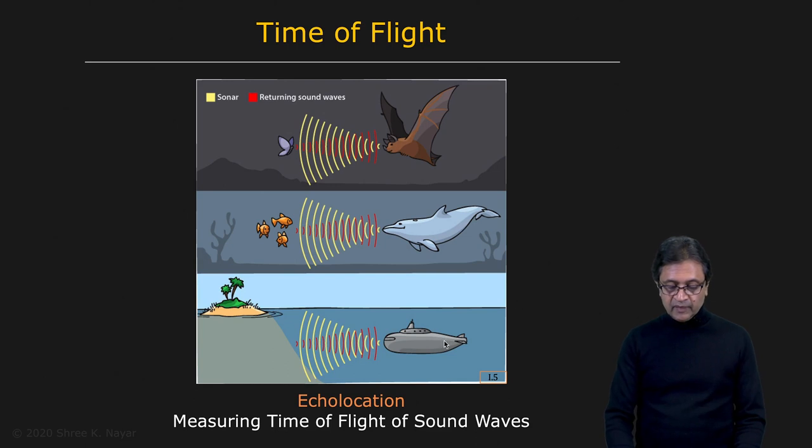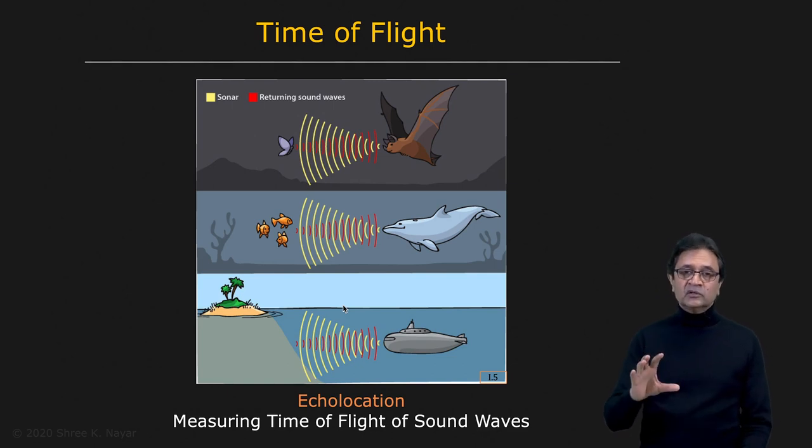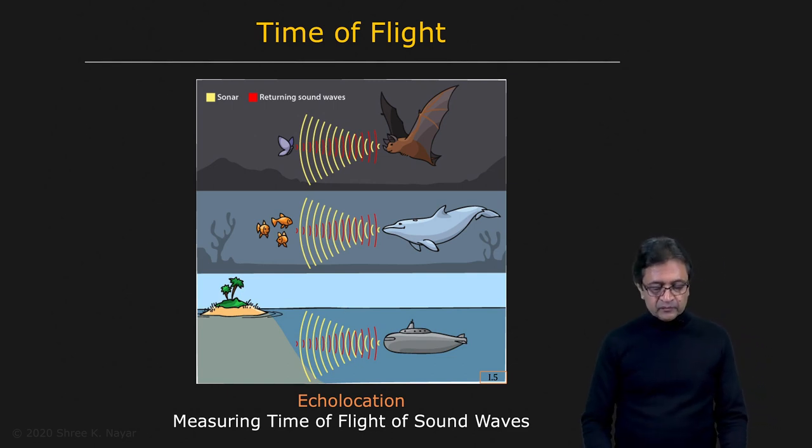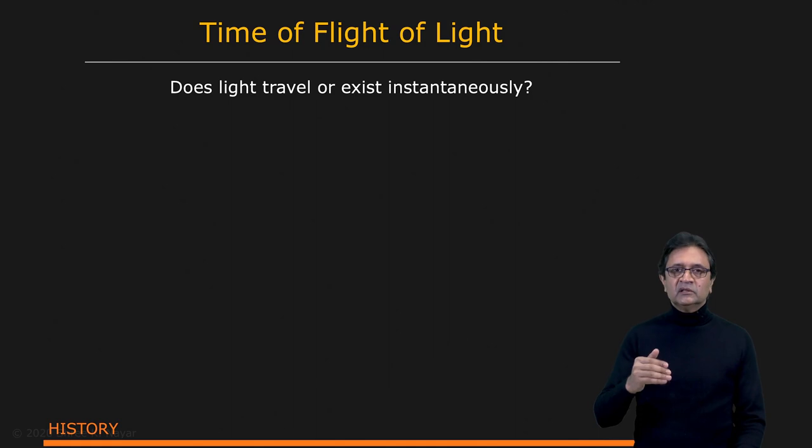It's also used by man-made systems like submarines, for instance, to figure out how far land may be or how far a ship on the surface of water might be by looking at echoes. But this is in the context of sound waves. What we want to do is use time of flight in the context of light—we want to measure the time of flight of light.